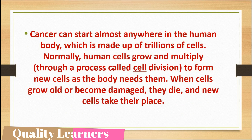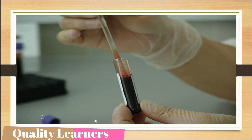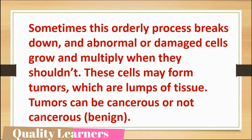Cancer can start in almost every part of the human body, which is made up of trillions of cells. Normally, human cells grow and multiply through a process called cell division, forming new cells as the body needs them. When cells grow old or become damaged, they die and new cells take their place. Old cells are removed from the body and new cells are formed approximately every three months.